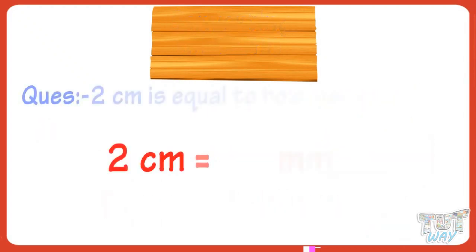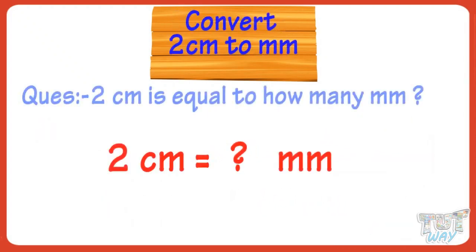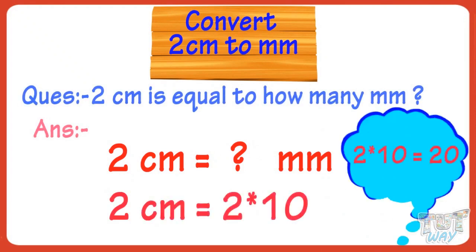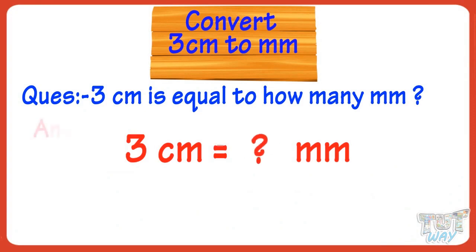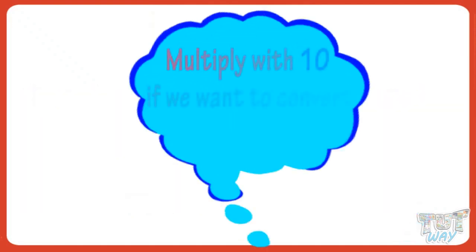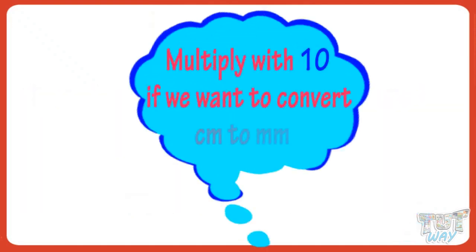Let's convert 2 centimeters to millimeters. 2 multiplied by 10 equals 20. So 2 centimeters equals 20 millimeters. Let's convert 3 centimeters to millimeters. 3 multiplied by 10, we get 30. So 3 centimeters equals 30 millimeters. So we multiply with 10 if we want to convert centimeters to millimeters.